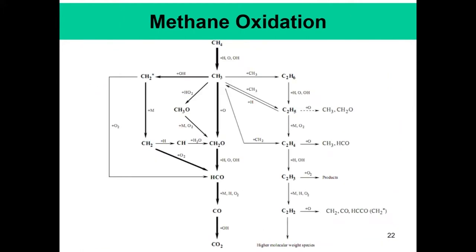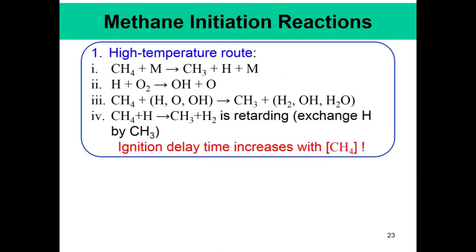Methane oxidation can be schematically represented in a diagram where methane essentially goes to form CO. The thick arrows indicate more important processes, while the thin arrows indicate less important processes. We will discuss this in more detail rather than just going through the schematic.